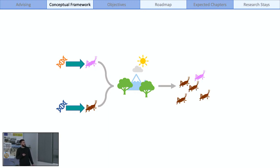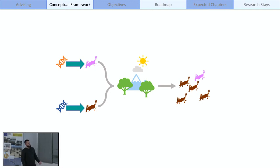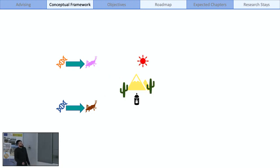Our traditional evolutionary thinking has been based on the concept of a more or less rigid relation between genotype and phenotype, considering the environment just as a filter that dictates which individuals survive and increasing their genomic ratio in the populations. And that depends on the environment.